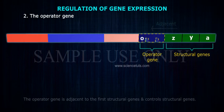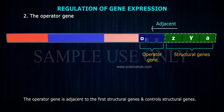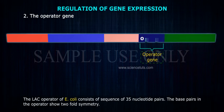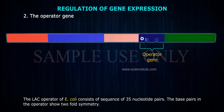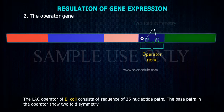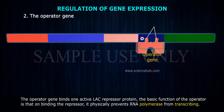The operator gene is adjacent to the first structural genes and controls structural genes. The LAC operator of E. coli consists of a sequence of 35 nucleotide pairs. The base pairs in the operator show two-fold symmetry. The operator gene binds one active LAC repressor protein.